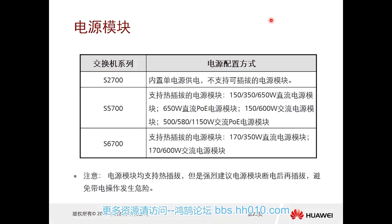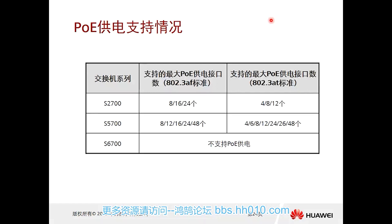The S6700 also supports hot swapping. When replacing a power module, ensure the other power module is in a powered state, otherwise service will be interrupted — hot swap requires non-disruptive service. Regarding PoE, in the product naming convention, a model with 'PW2' in its name indicates PoE support.